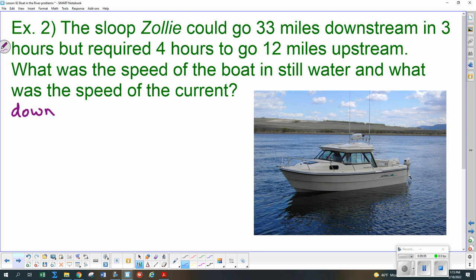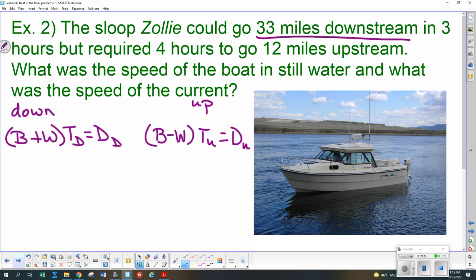Downstream. Was that B plus W or B minus W? Riley. That's the faster one, so it needs to be the B plus W times the time downstream is the distance downstream. And upstream is going to be B minus W because that's the slower one. Time upstream is the distance upstream. 33 miles downstream. We plug that in. 3 hours. Oh, this time the times aren't the same. And they actually tell us what at least one of the times is.